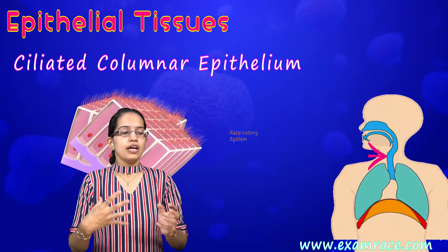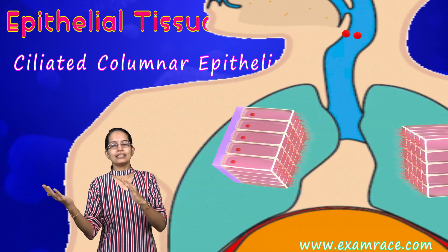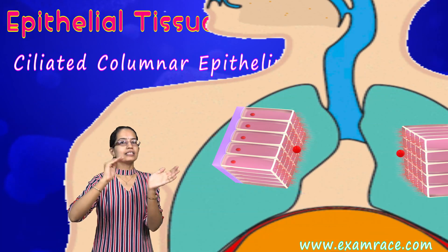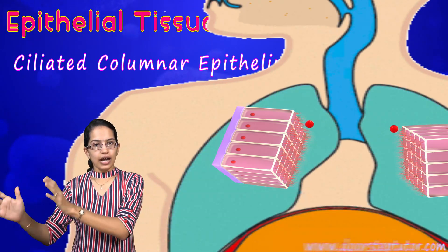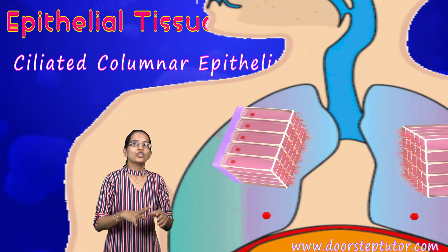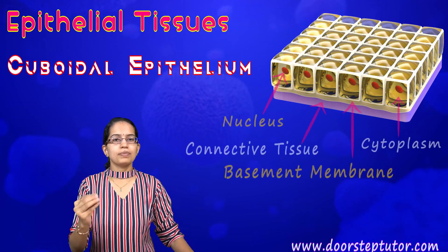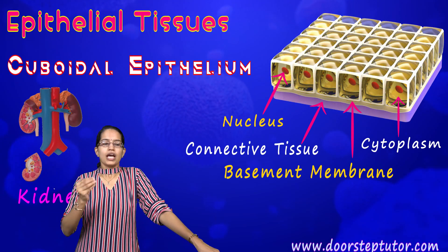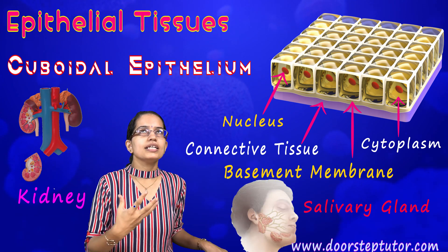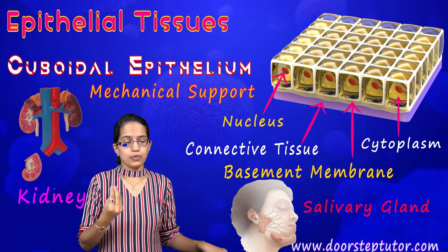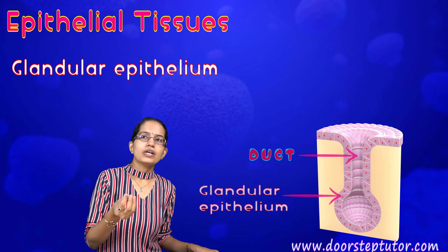Another example of columnar epithelium is ciliated columnar epithelium, present in the respiratory system. These cilia move and push mucus forward — that is the major function of ciliated columnar epithelial cells. Additionally, cuboidal epithelial cells are present in the kidney tubules, providing mechanical support.